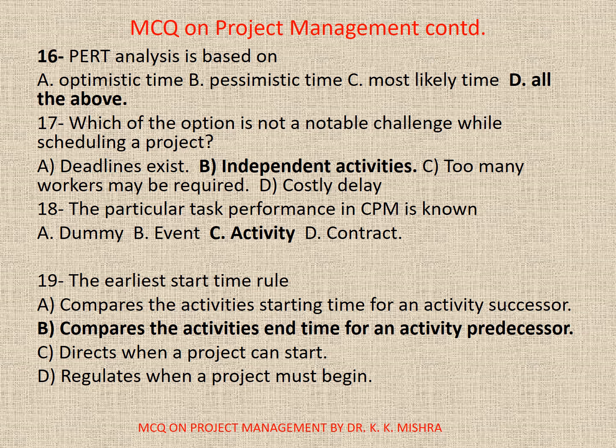Question 18 is again a repeated question about the particular task performance in CPM, so the correct option is C: Activity. Question 19: The earliest start time rule — Options: A. Compares the activities starting time for an activity successor; B. Compares the activities end time for an activity predecessor; C. Directs when a project can start; D. Regulates when a project must begin. Correct option is B: Compares the activities end time for an activity predecessor.